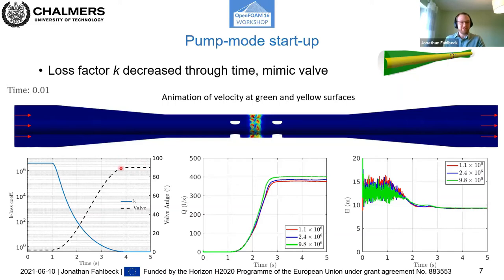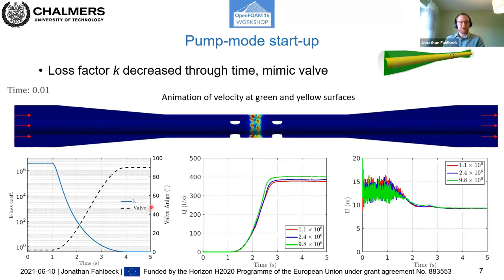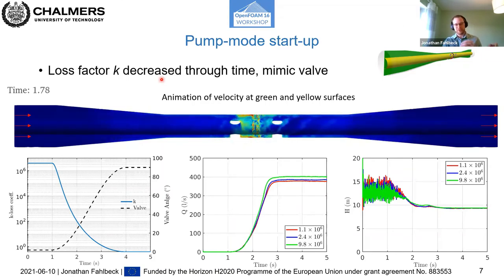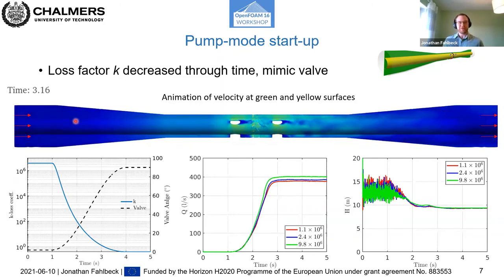When the valve loss factor is high the flow is spinning around, and as the valve opens the flow is pushed toward the correct direction — from left to right. We can see nice vortex shedding of the downstream support struts and a very complex flow pattern of the counter-rotating machine.